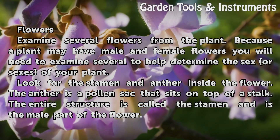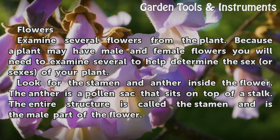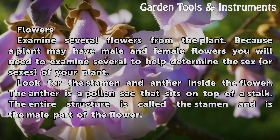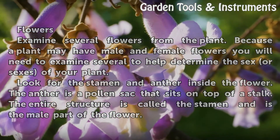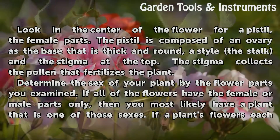Look for the stamen and anther inside the flower. The anther is a pollen sac that sits on top of a stalk. The entire structure is called the stamen and is the male part of the flower.